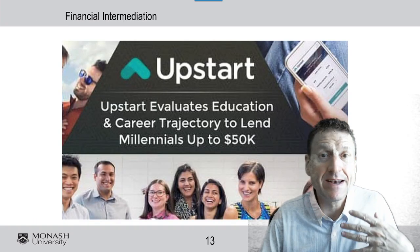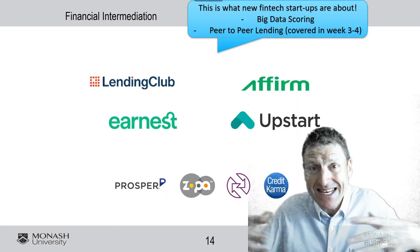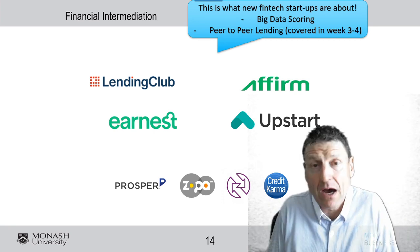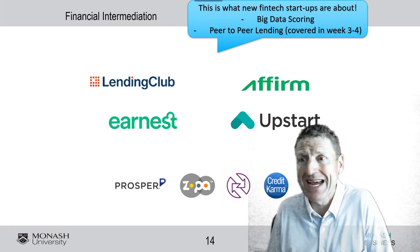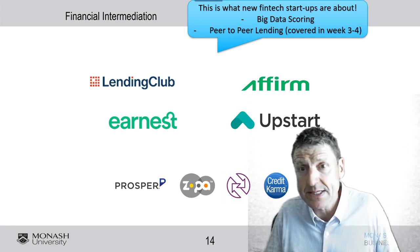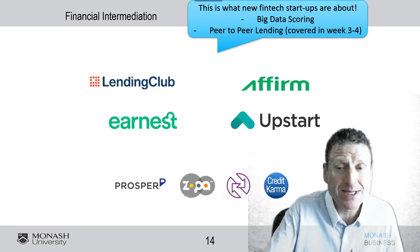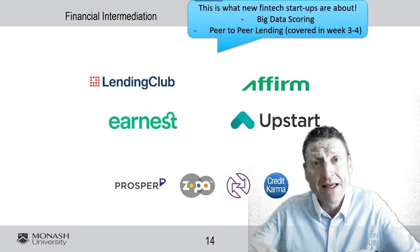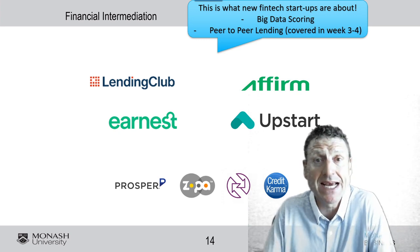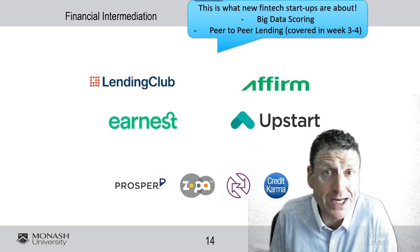More and more fintechs have gotten into this area of training and scoring. This is basically what peer-to-peer lending is about. Companies like Lending Club, Earnest, Affirm, and Upstart have emerged, and there are others setting up in Malaysia and other areas in the Southeast Asian region.